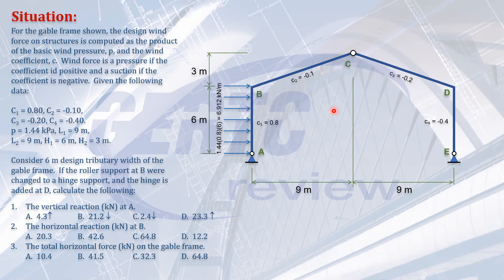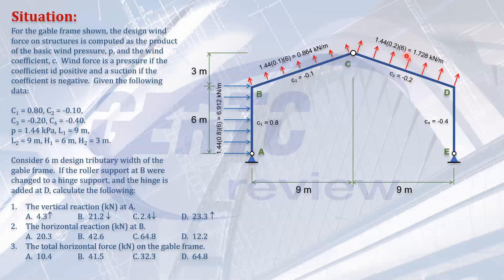On the inclined side BC, the intensity is similar but we use coefficient 0.1. Since this is negative, it acts away from the structure. 1.44 times 0.1 times 6 equals 0.864 kilonewtons per meter. Here it's 1.728, using 1.44 times 0.2.